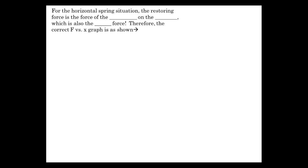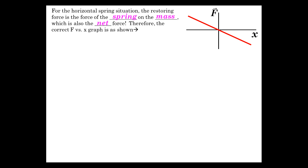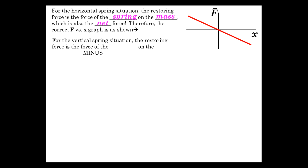Let's consider the horizontal spring situation. The restoring force is simply the spring on the mass, and that's going to be the net force. The vector force is, in fact, minus kx — because the spring is pulling in the opposite direction of the displacement. Displacement to the right means the spring pulls to the left, so F equals minus kx.